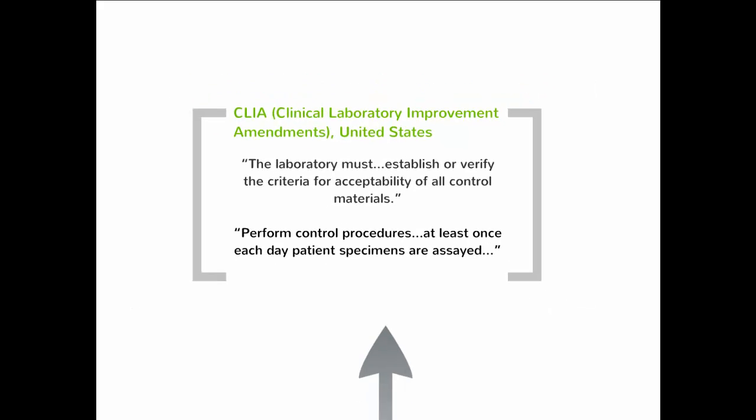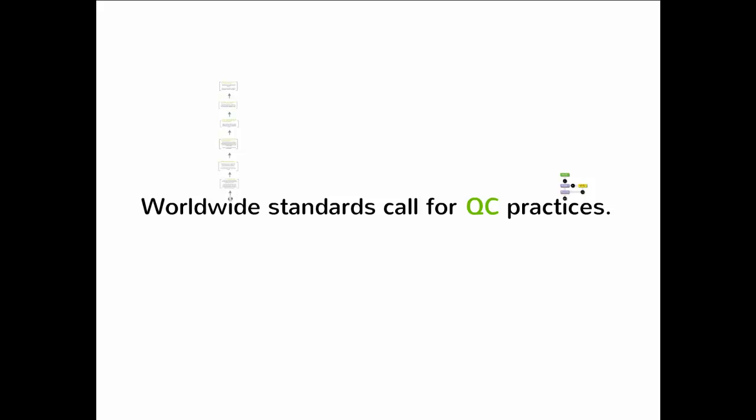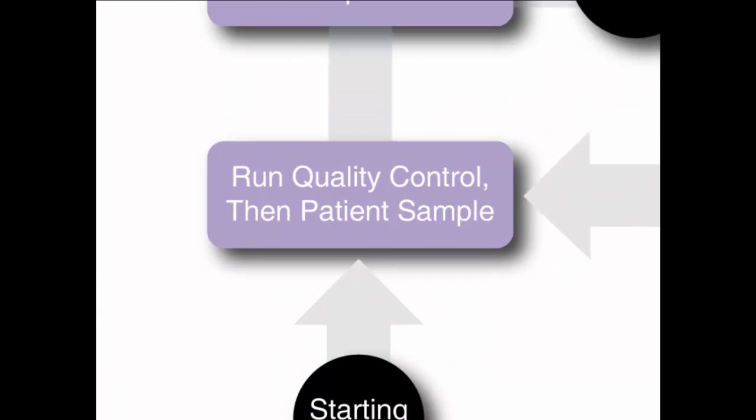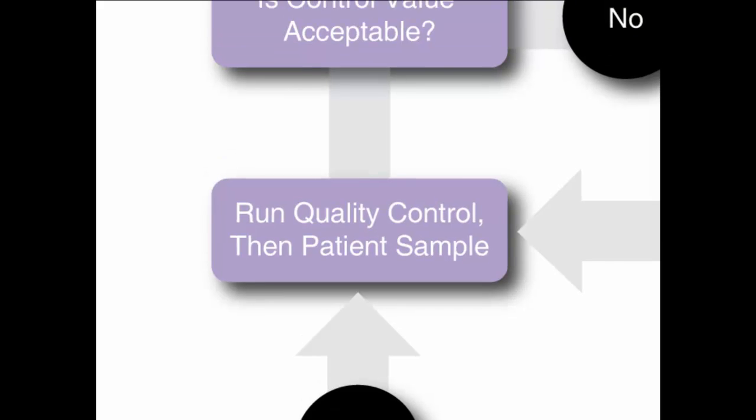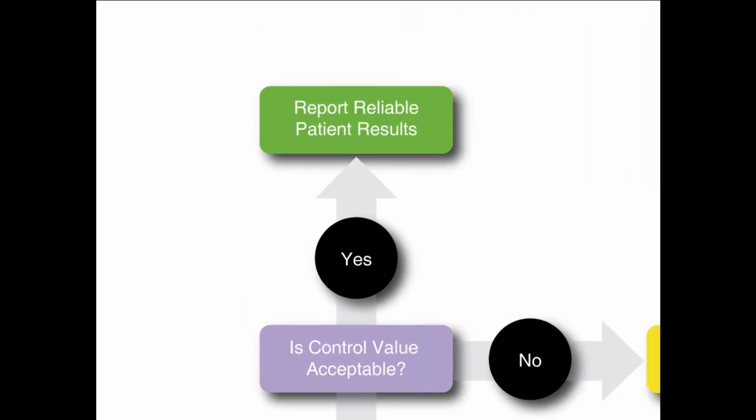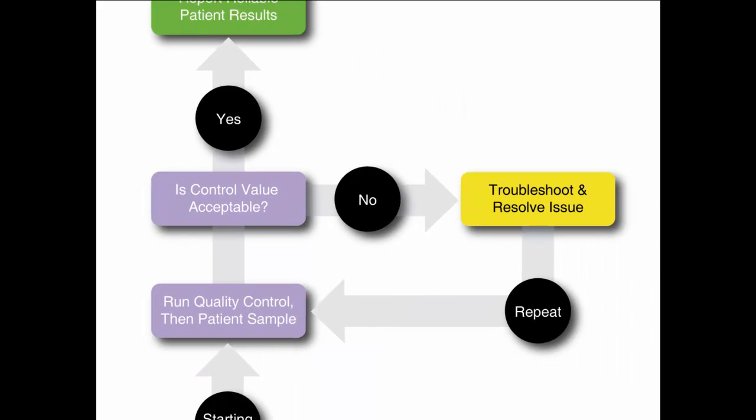The different worldwide standards might leave some laboratories looking for a starting point. Start by running a quality control before running patient samples. Determine if the control value is acceptable. If it is, you can report reliable patient results. If it isn't, troubleshoot, resolve the issue, and repeat the test.